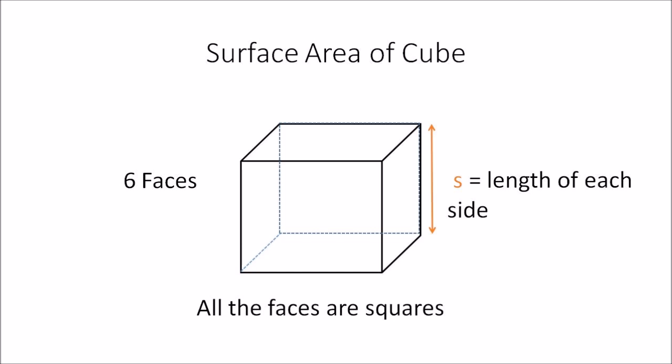That side 's' is equal to the length of each side. It's very important to remember that all the faces are squares, and because they're squares, all the sides are the same. That's what we'll use in order to calculate the surface area of a cube.